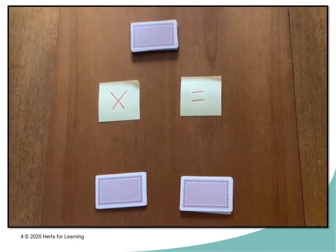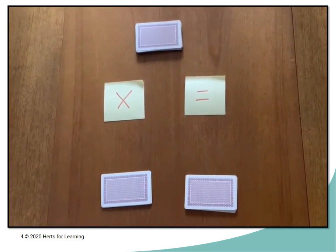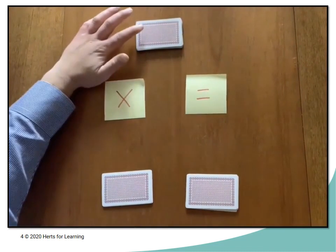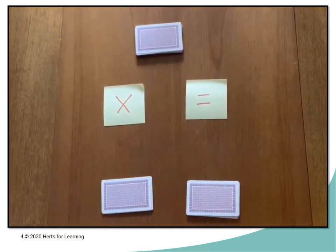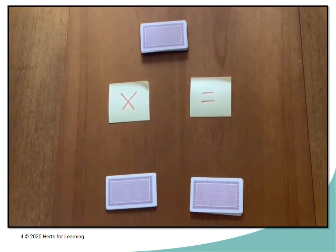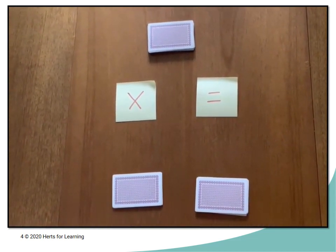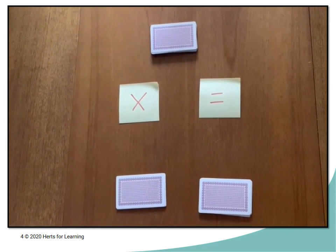So we've got two post-it notes here to be our multiplication and equals symbol. Then we've got our pack of cards which have had the tens and jacks removed. Gave them a good shuffle. Dealt out two hands of 8 for our two players. Of course you could play it with more players.